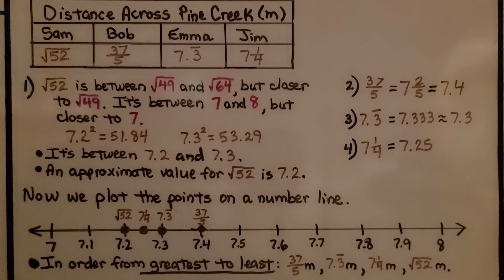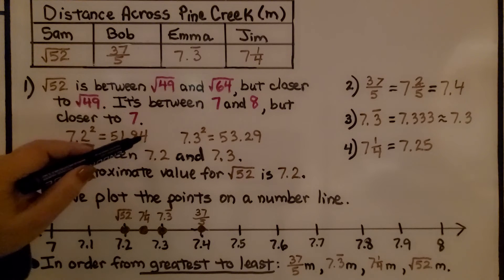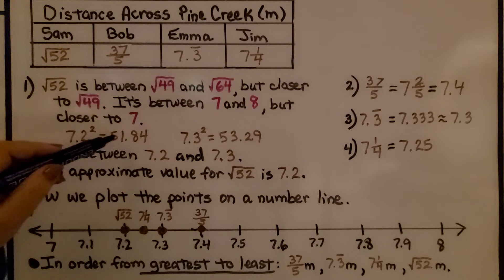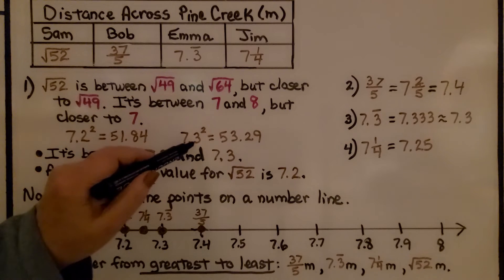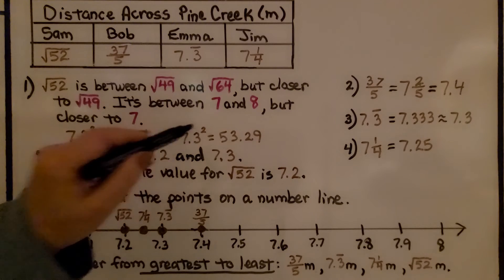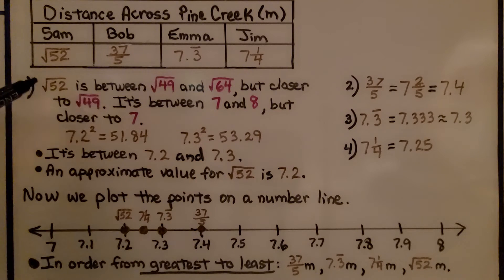We know it's somewhere between 7 and 8, but closer to 7. So we can try 7.2 squared. We multiply 7.2 times 7.2, and we get 51.84. That's not quite 52. We can try 7.3 times 7.3, that's 7.3 squared, and we get 53.29. Well, now we went way over 52. So we know it's closer to 7.2.